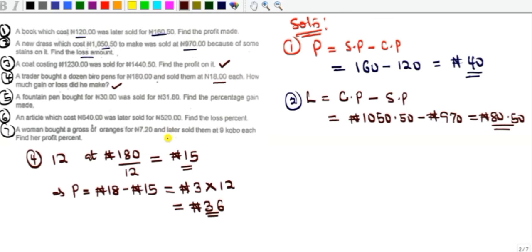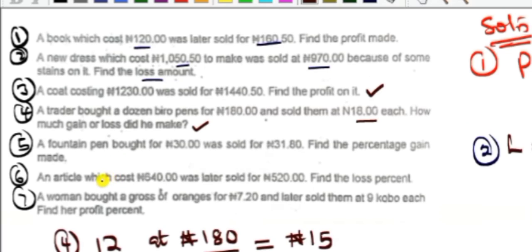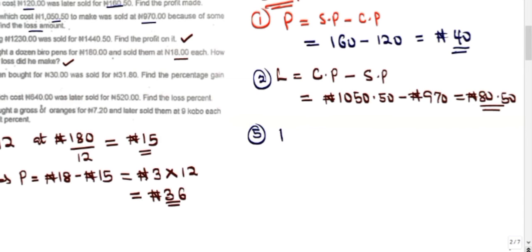Example five: a fountain pen was bought at 30 naira and sold for 31.80 naira — find the percentage gain. The selling price is greater than the cost price, so it is a gain. Profit = SP − CP = 31.80 − 30 = 1 naira 80 kobo.